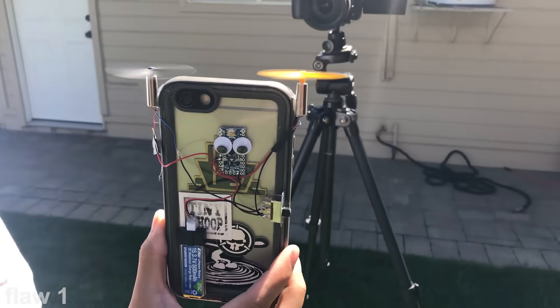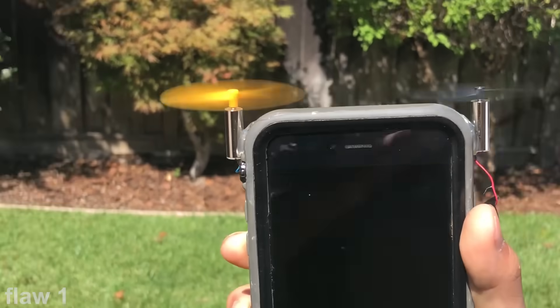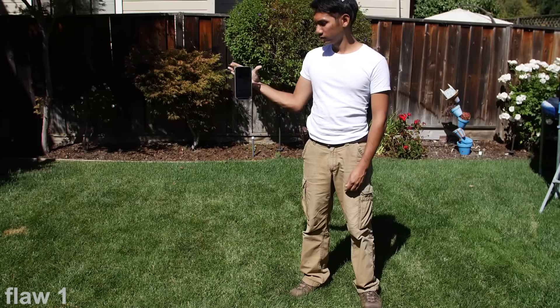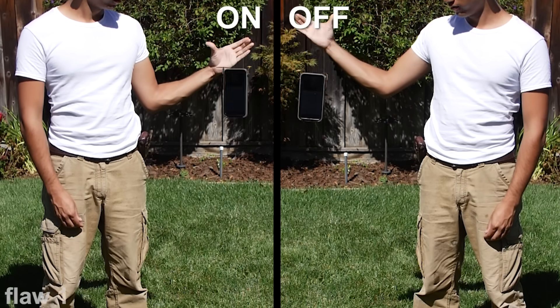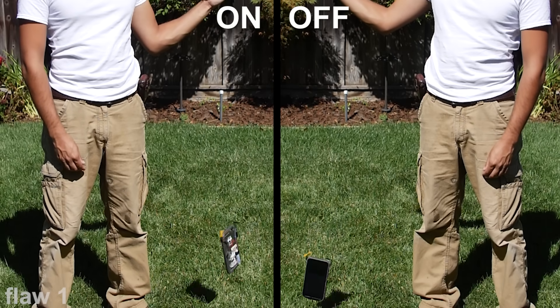In fact, we recreated the exact setup he used in the video, and turned the motors to full throttle, and this is what happened. Here it is in slow-mo, and as you can see, there's hardly any difference than if you don't turn the propellers on at all.